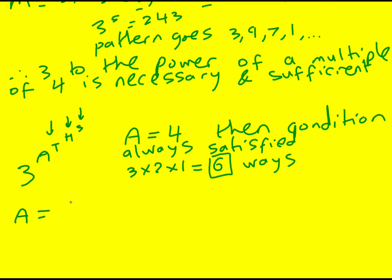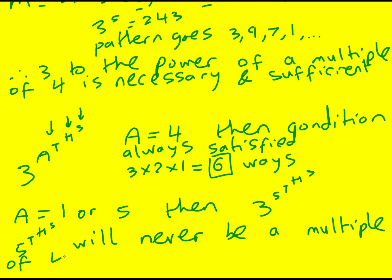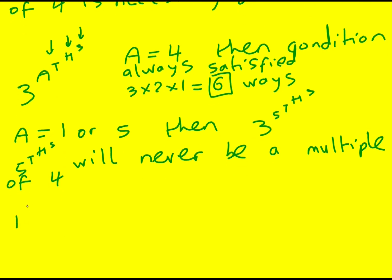If A is equal to 1 or 5, then we've got 3 to the 5 to the T to the H to the S. 5 to the T to the H to the S will never be a multiple of 4. And 1 to the T to the H to the S will always be 1, will not either.